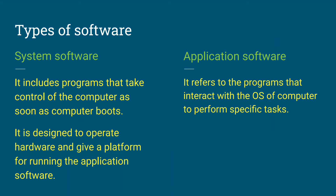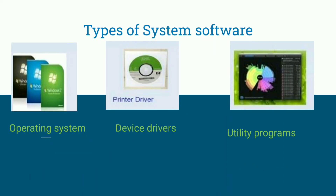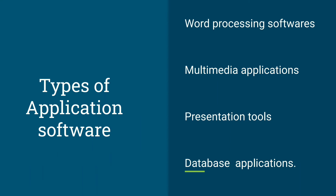Application software is used to perform a specific task. The types of system software include: operating system, device driver, and utility programs. The types of application software include: word processing, multimedia applications, presentation tools, and database applications. Word processing includes MS Word and MS Office. Multimedia applications include video and audio editing software. Database applications handle bulk information.